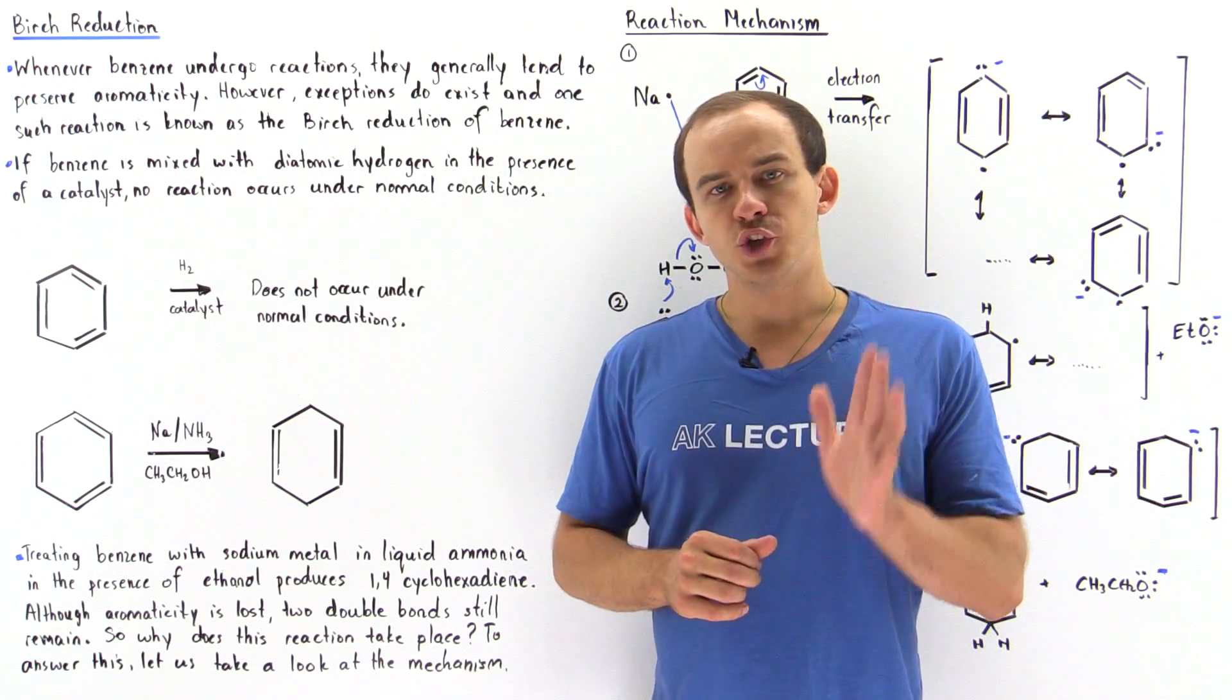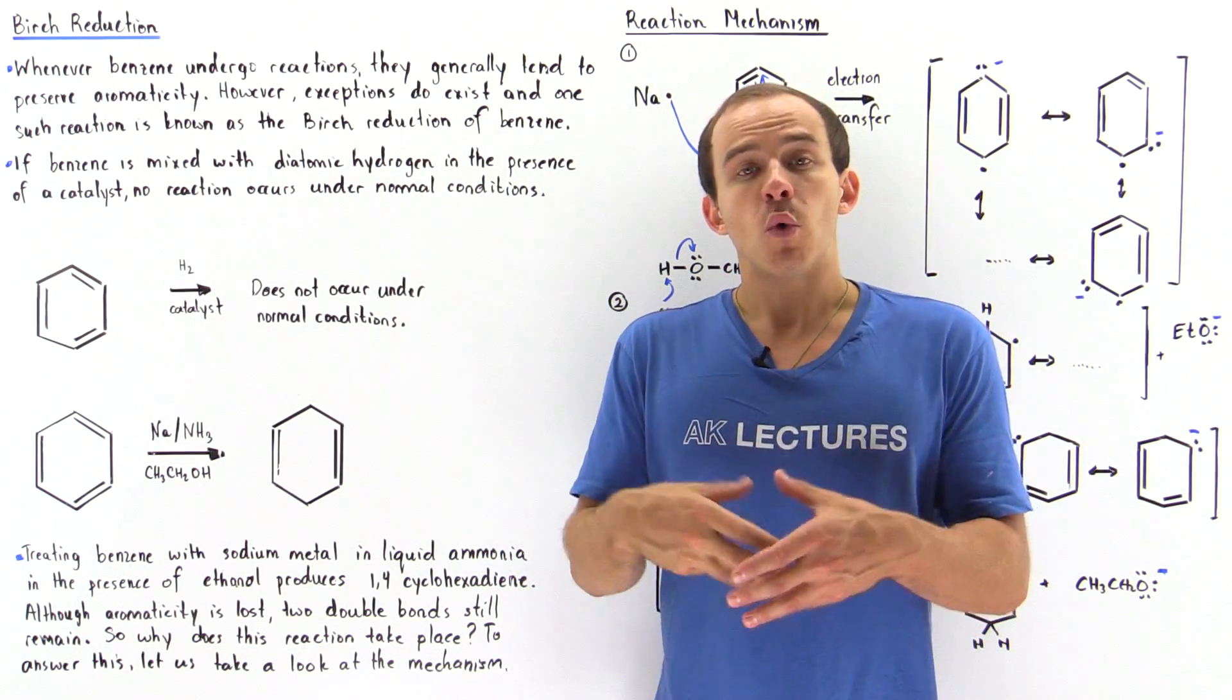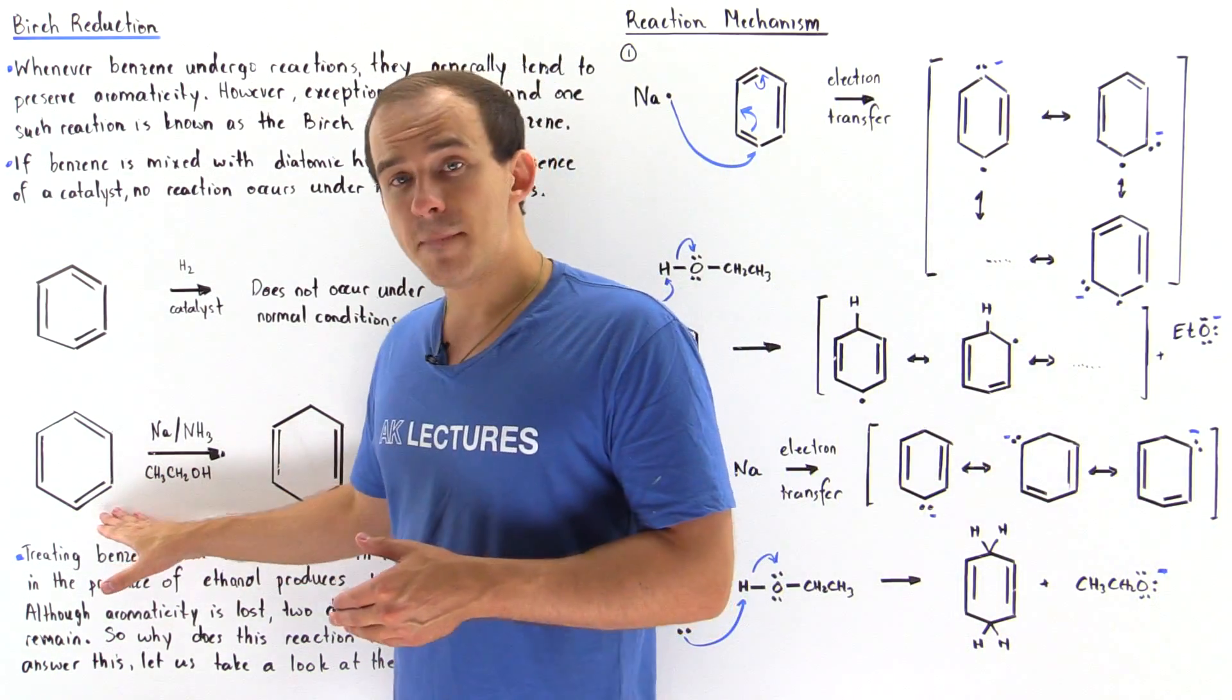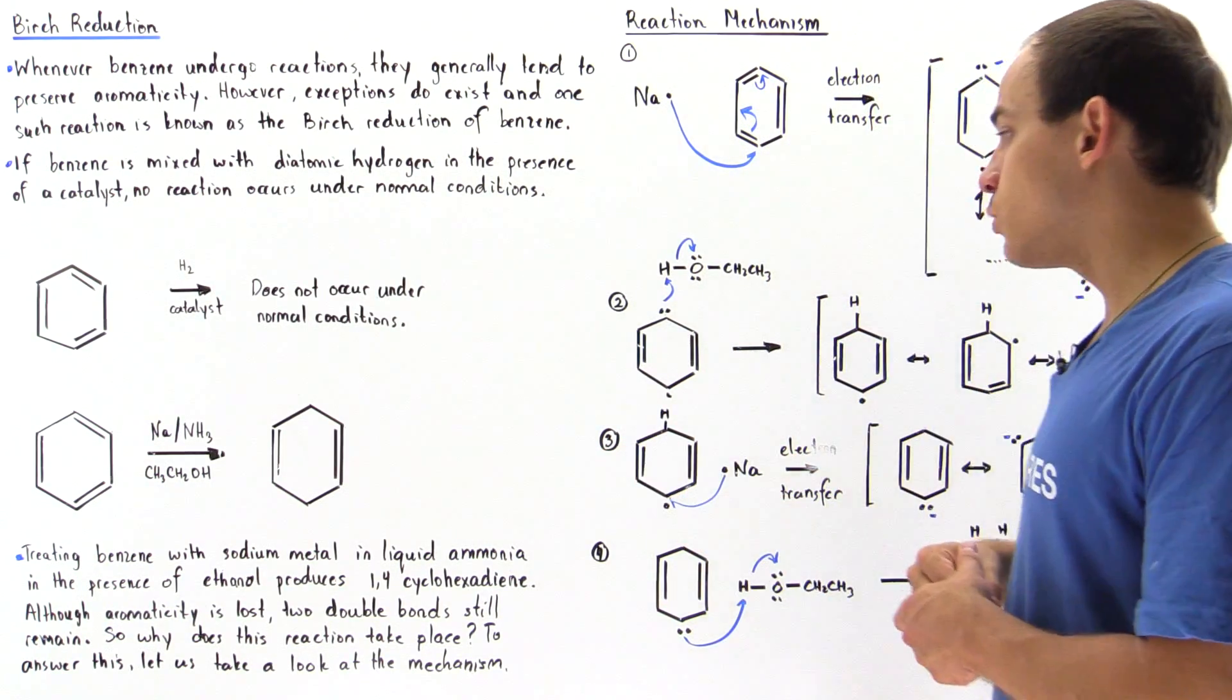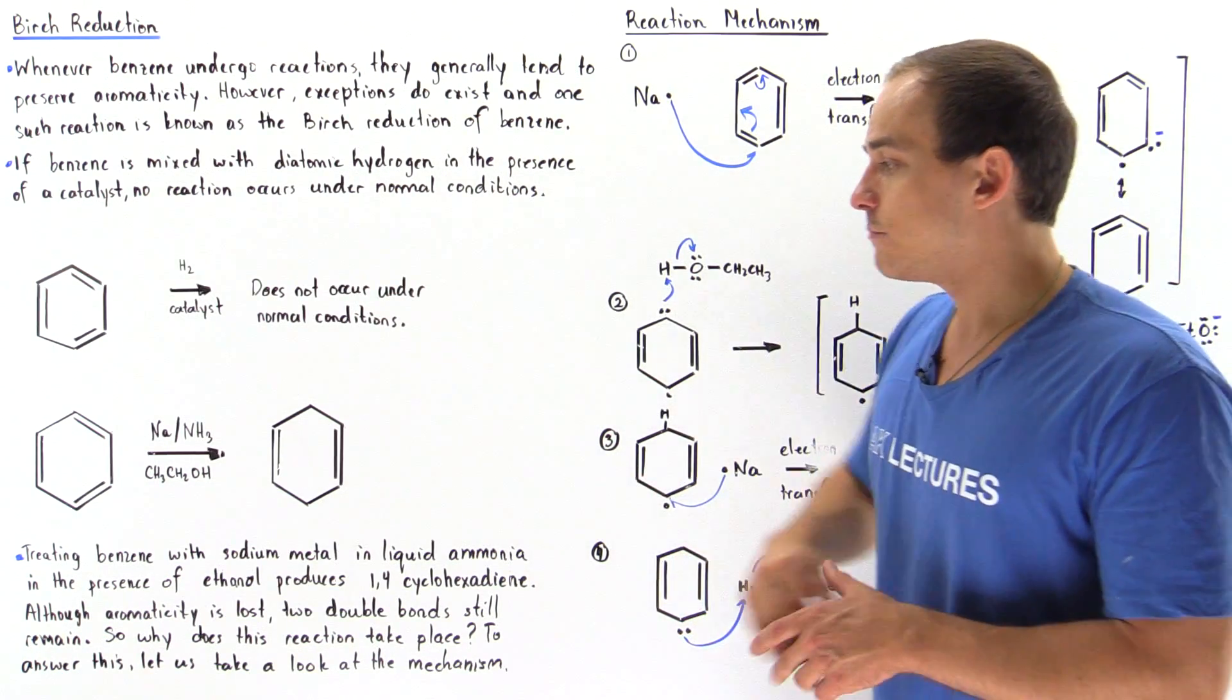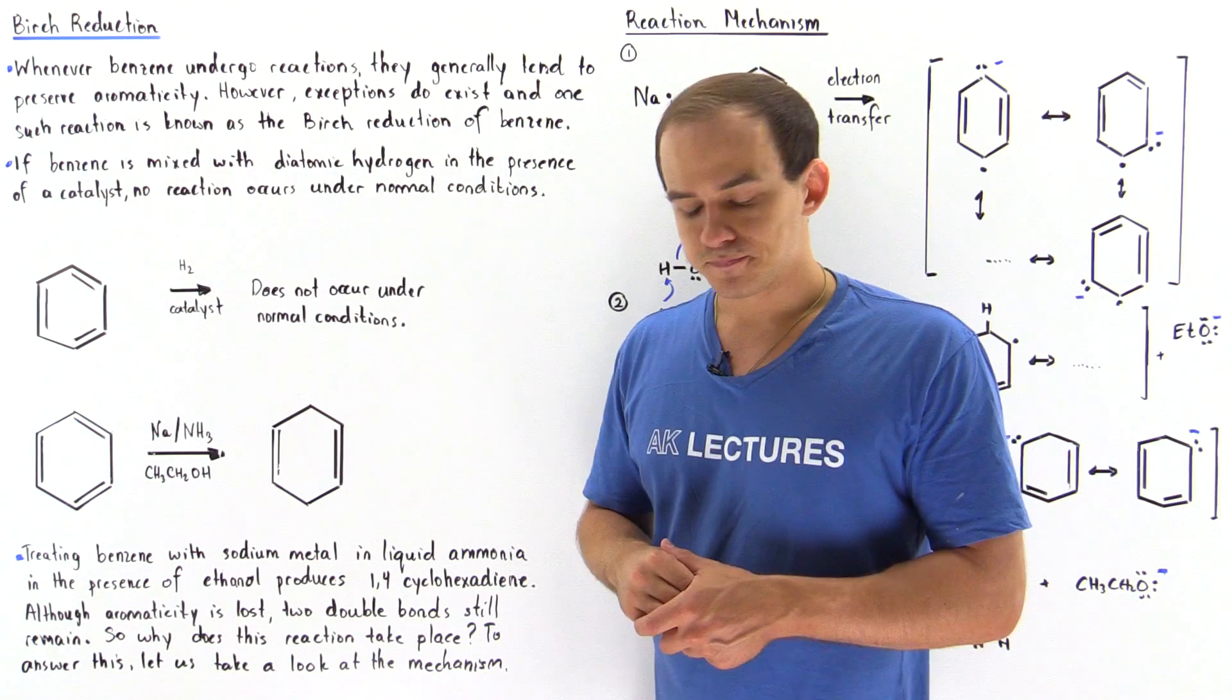Exceptions to this rule do exist, and one exception of a reaction that does not preserve aromaticity when benzene reacts is known as the Birch reduction of benzene. If we take benzene and react it with sodium metal mixed in with liquid ammonia in the presence of a bit of ethanol alcohol, we produce 1,4-cyclohexadiene. We see that aromaticity is lost when we go from this benzene to this product.